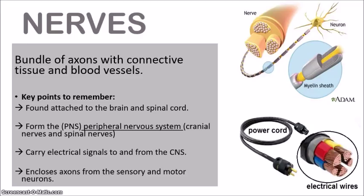There are key points to remember about nerves. Nerves are generally found attached to the brain and the spinal cord, forming the PNS (peripheral nervous system). They include the cranial nerves, which branch from the brain, and the spinal nerves, which branch from the spinal cord. They carry signals to and from the CNS, which consists of the brain and the spinal cord. The nerves enclose the axons from both the sensory and the motor neurons — so the axons of those two neurons run through the nerves.